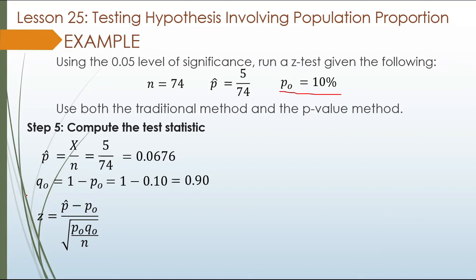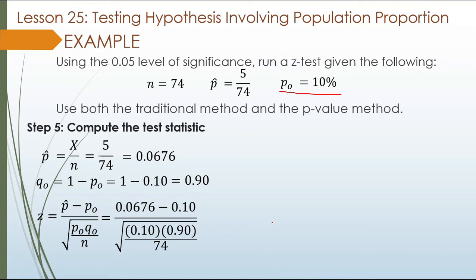Z equals p-hat minus p-sub-o divided by the square root of p-sub-o times q-sub-o over n. We now have p-hat, p-sub-o, q-sub-o, and n, so we can compute the z value. The result is negative 0.93.